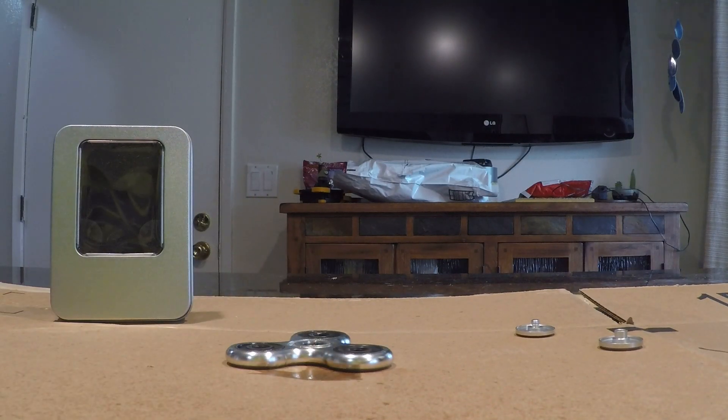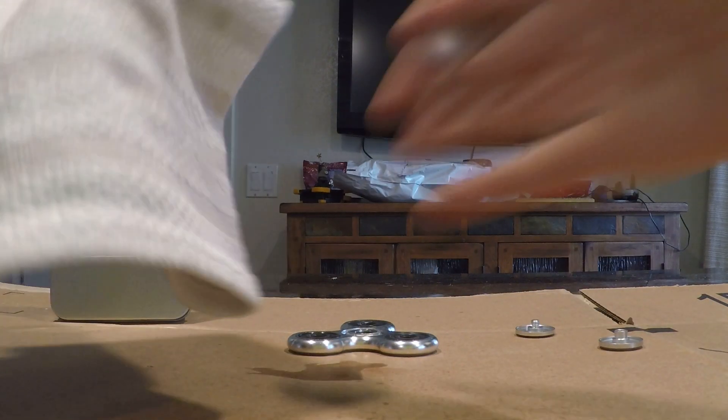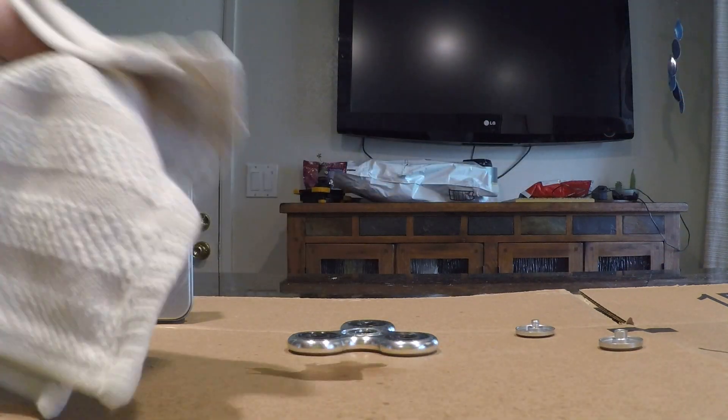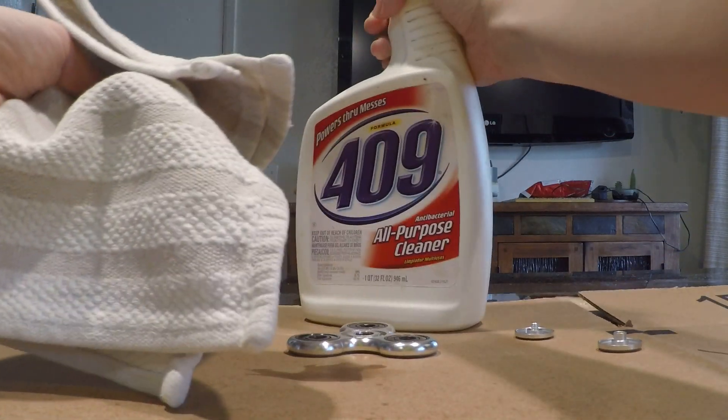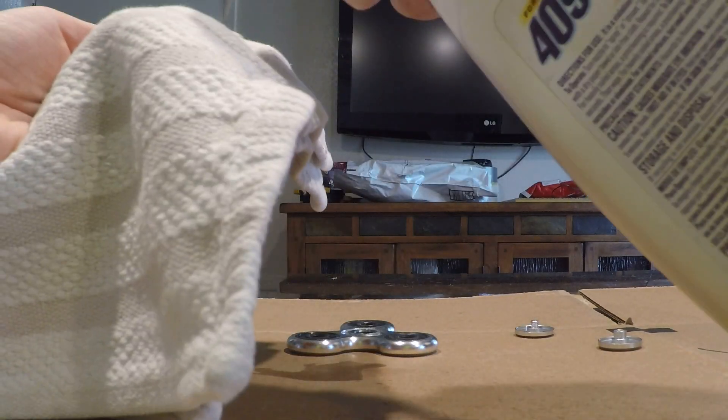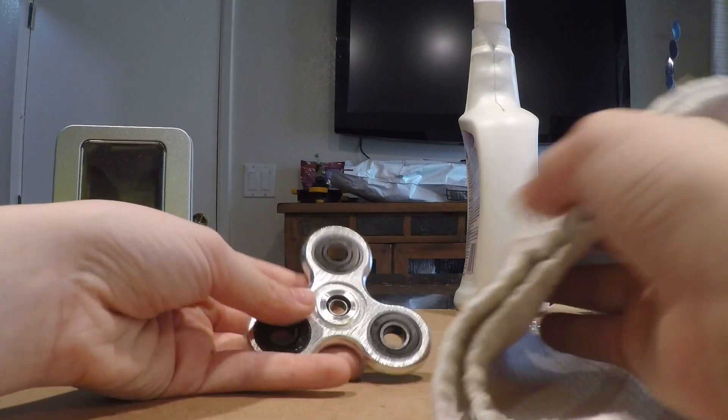Now next what you're going to need to do is get just a regular towel like this and then spray some cleaner on it. I'm using this type, so just spray it on there and now we're going to rub it off a bit.